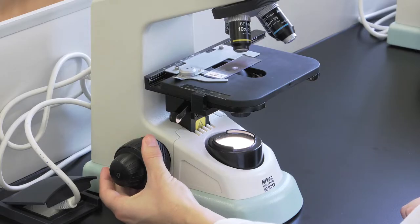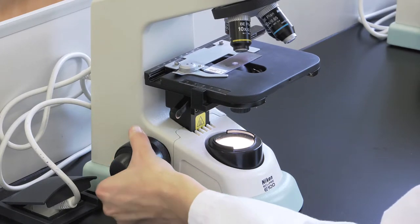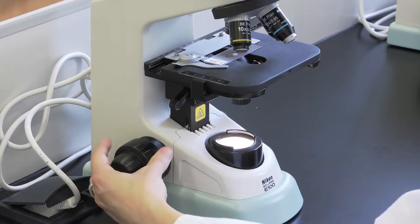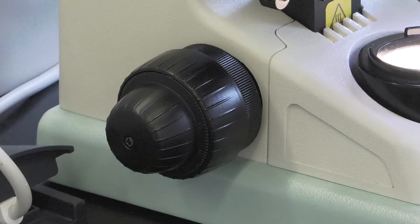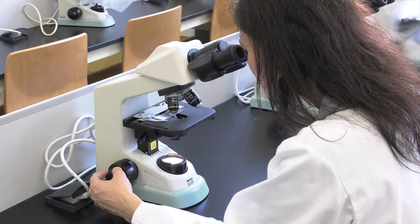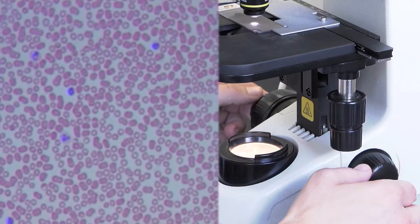The outer one is the coarse focus knob. It makes large displacements of the stage. The inner one is the fine focus knob and serves for carrying out small displacements of the stage. That is why it is used for focusing the sample with great precision.